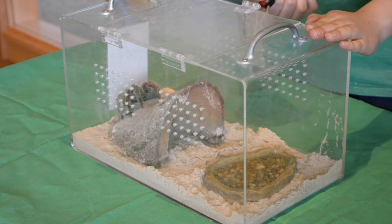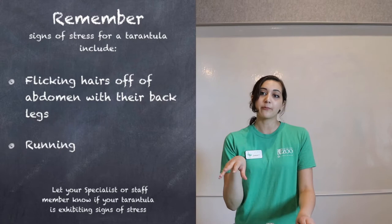Here we have a Chilean rose-haired tarantula in a locked display. Your role is to direct the public where to view the tarantula, since some will hide. You're also responsible for monitoring the stress signs of a tarantula, just like with any interp animal. Signs of stress for these guys include flicking hair off their abdomen with their back legs, and also running around the enclosure a lot.